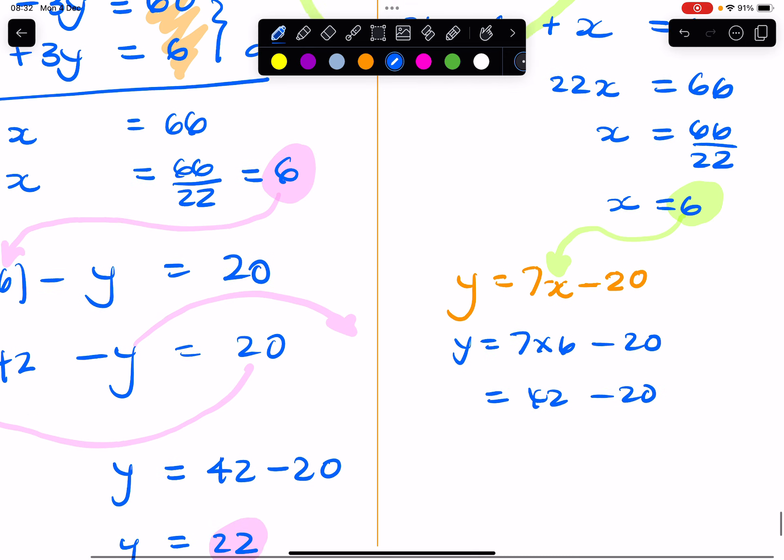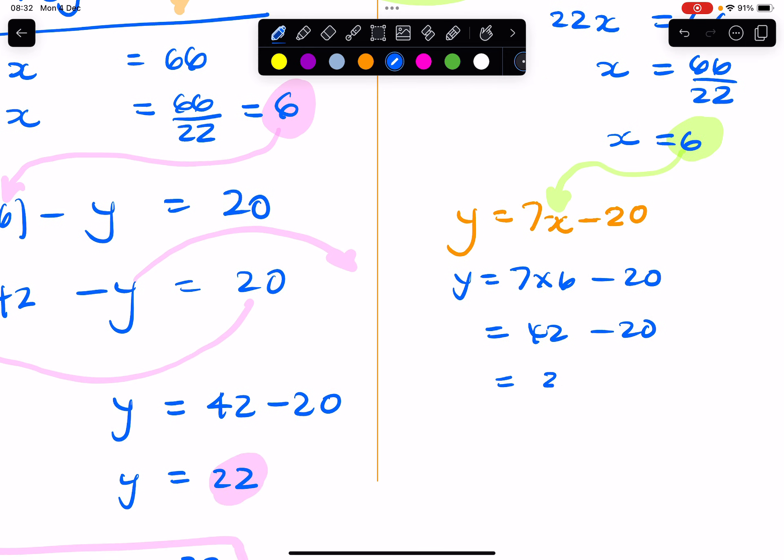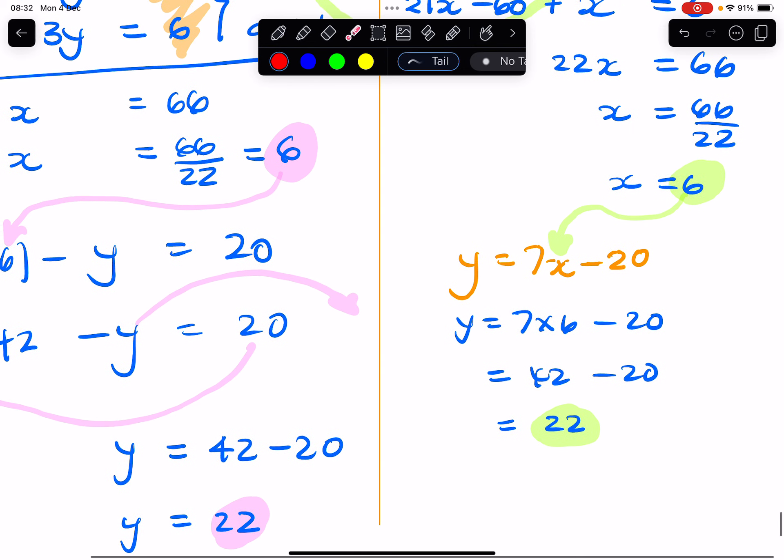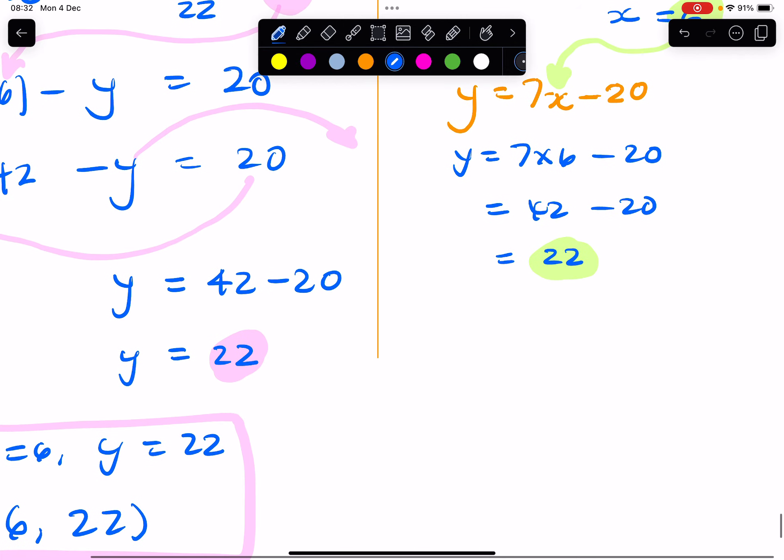42 minus 20 equals 22. And again, if that's familiar, it's because it's the same answer that we got previously. So now I have my two solutions x and y: I can write x equals 6.